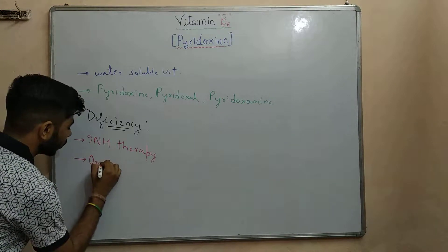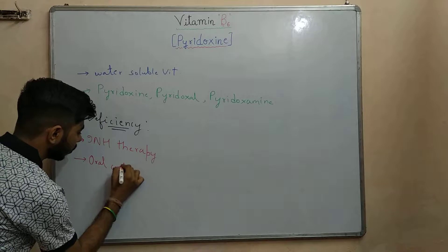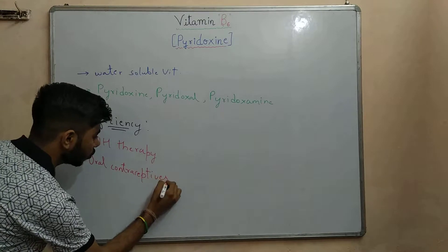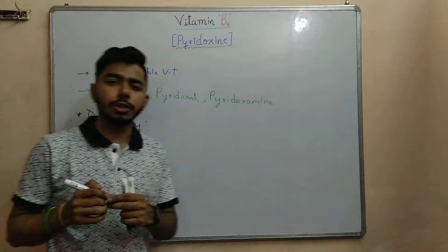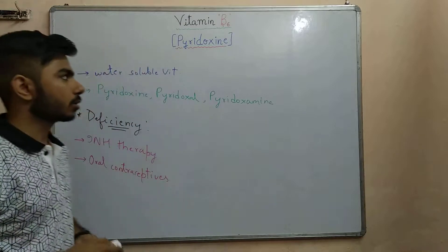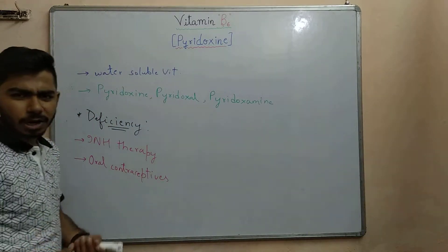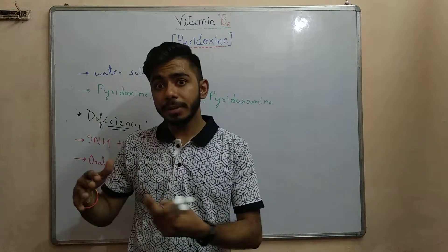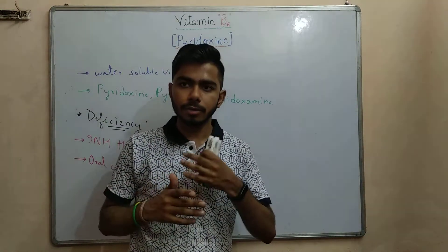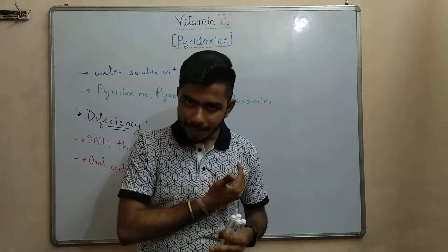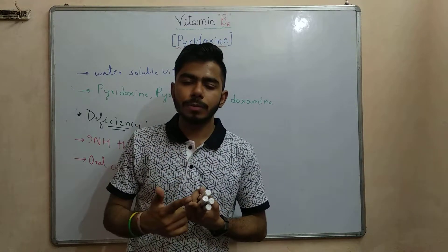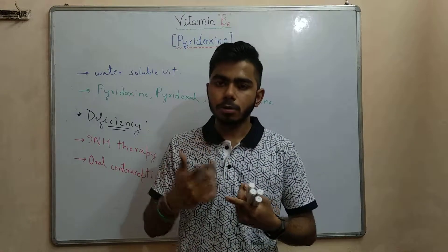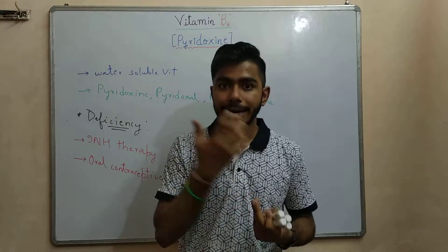As well as oral contraceptives — in the case of those women who do not want unwanted pregnancy, oral contraceptives can also lead to the deficiency of vitamin B6 or pyridoxine. Now, what can be the presentation? How is the patient going to present to you? In this case also, like vitamin B2 which we have already discussed, most of the patients are coming up with problems of the oral cavity. For example, glossitis, cheilosis, and stomatitis can be seen.